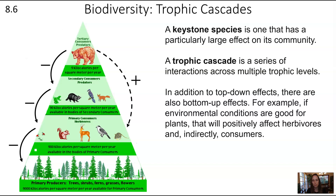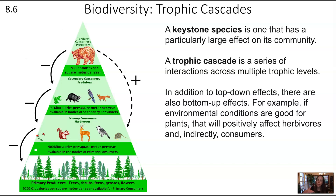It's also important to note that in addition to top-down cascades, we have bottom-up effects. For example, if environmental conditions are good for plants and there are lots of plants growing, that's good for herbivores, and you have more energy flowing up through the trophic levels from the bottom up.